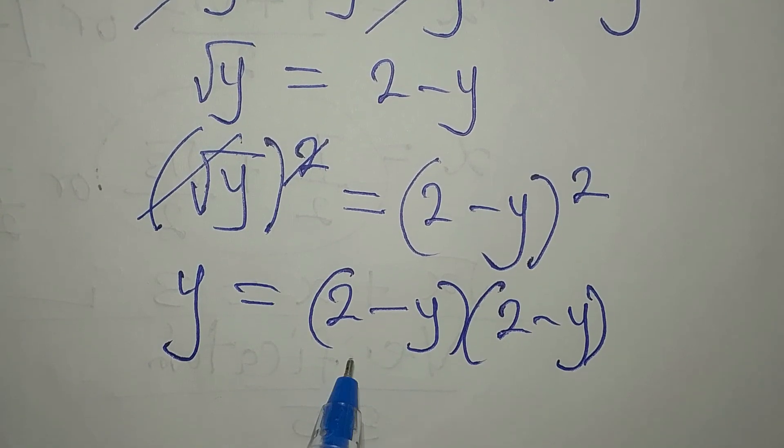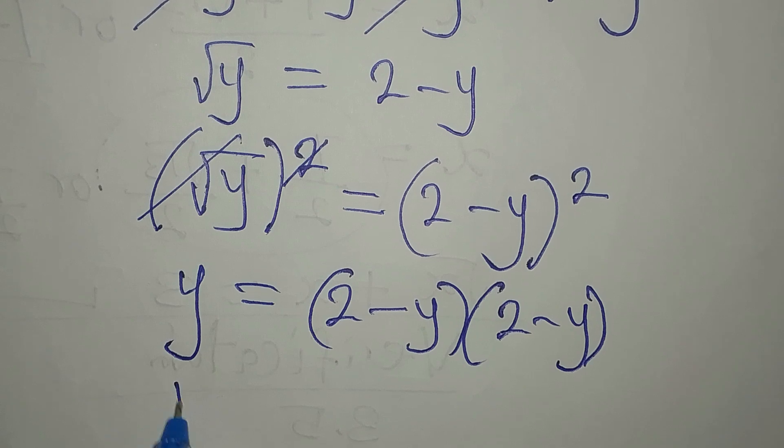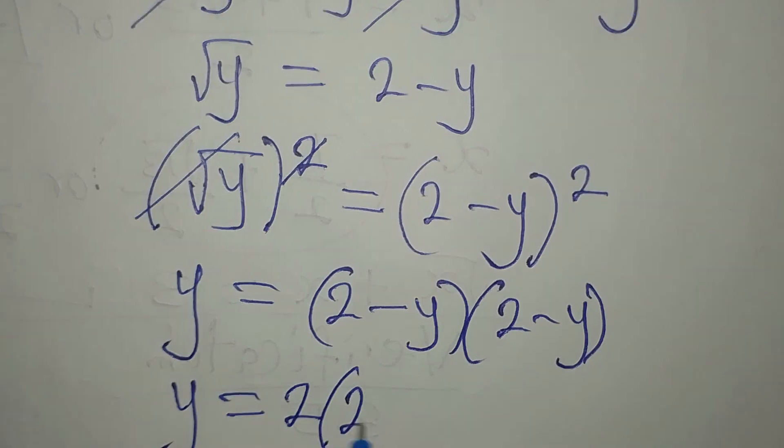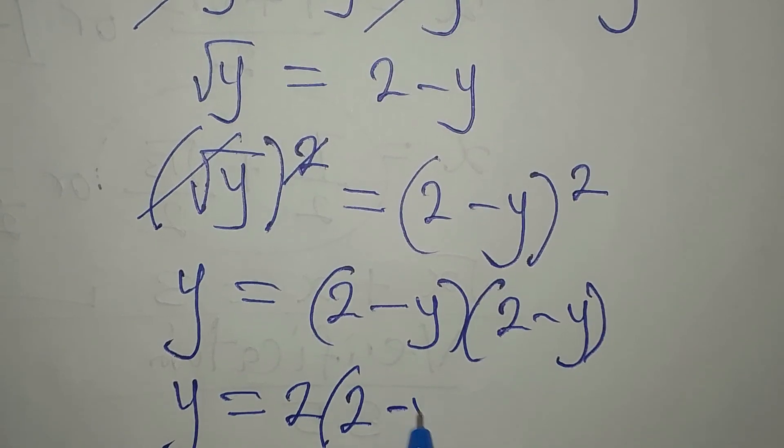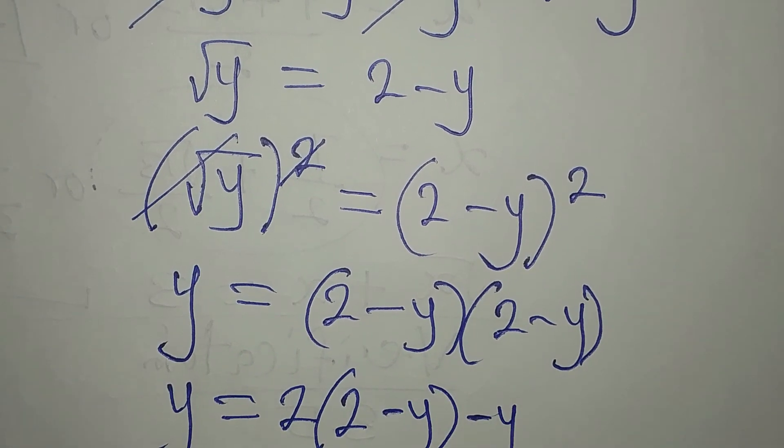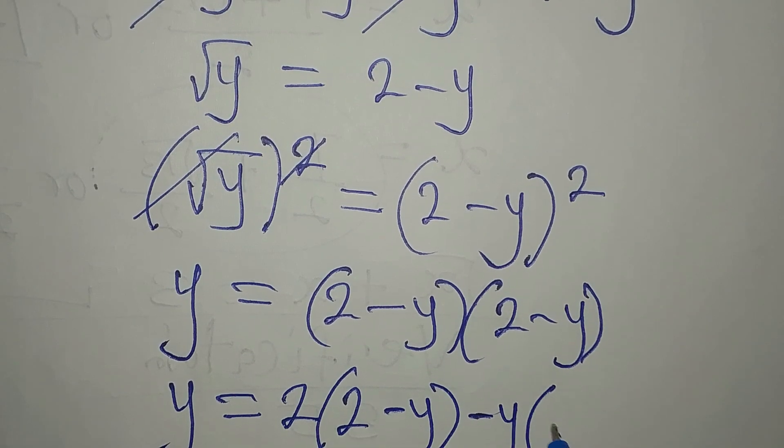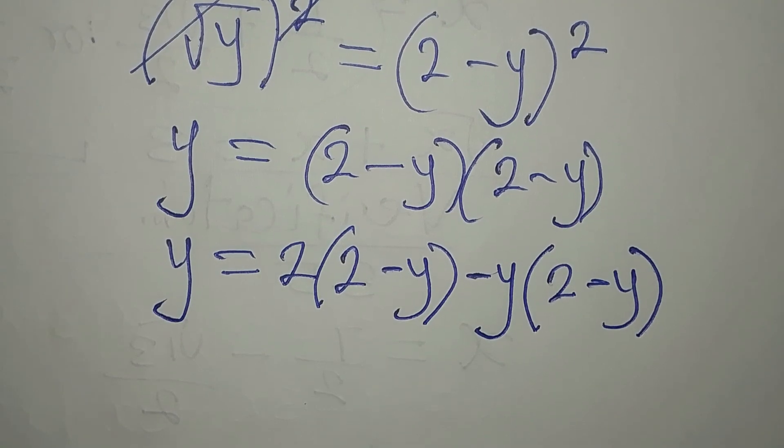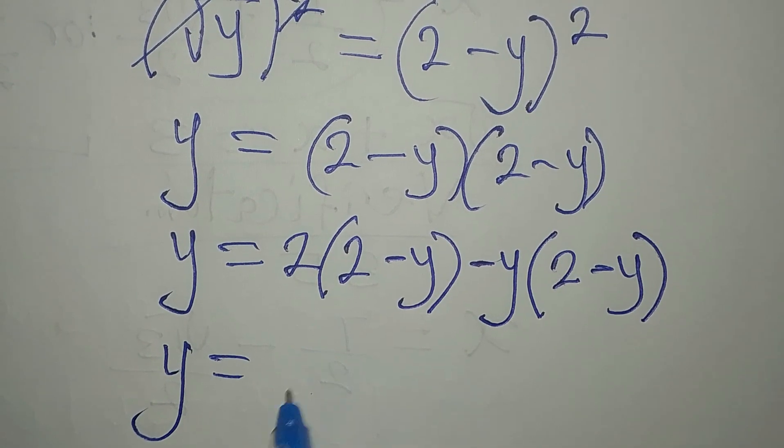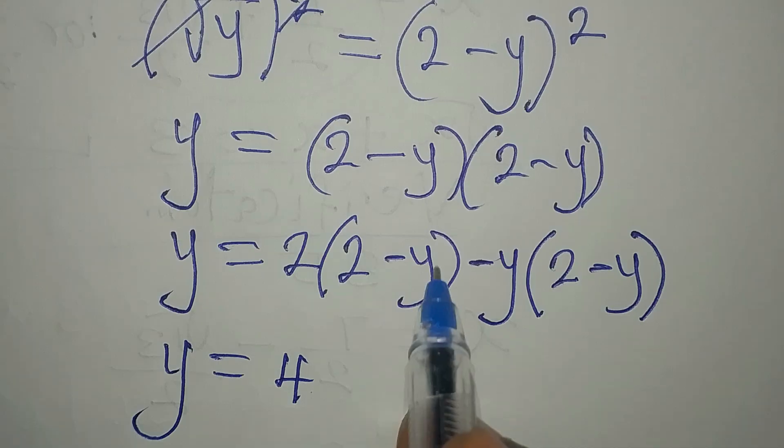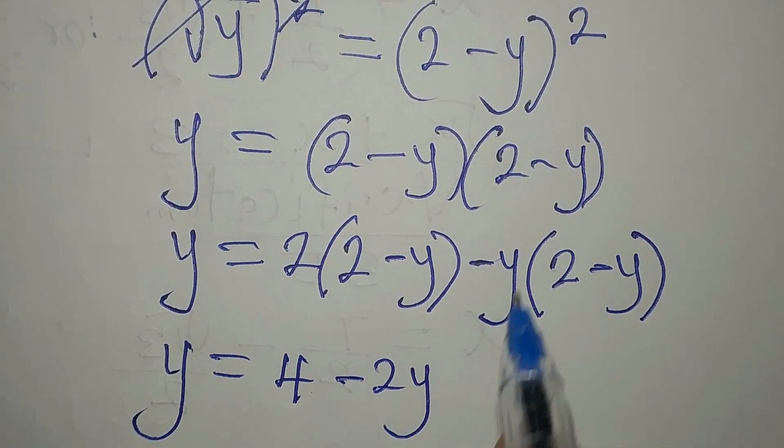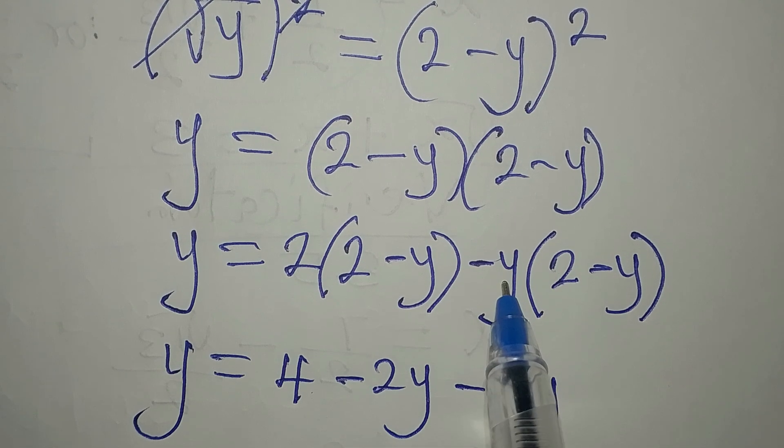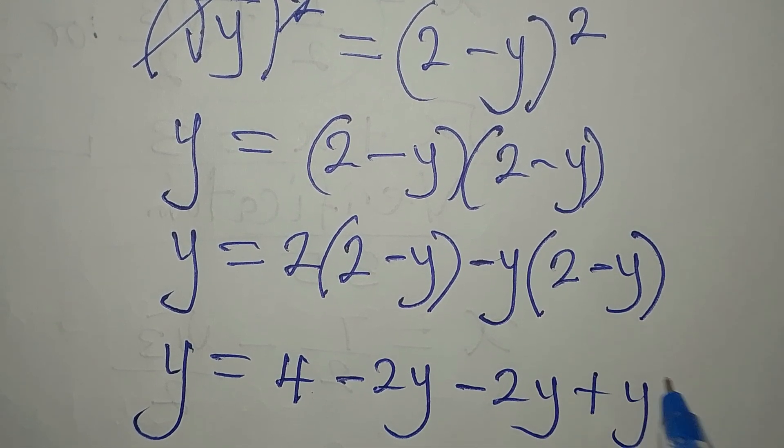If you have not subscribed to my channel, subscribe so you can get access to more of my videos. Now, let's arrange it in a way that everybody can understand. These 2 will multiply everything here. So you can write 2 times 2 minus y, then minus y into 2 minus y. Let's open the brackets. Y will now be 2 times 2 is 4, 2 times minus y is minus 2y. Then, minus y times 2 is minus 2y. Minus y times minus y will give plus y squared.